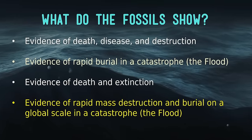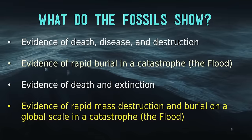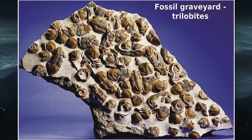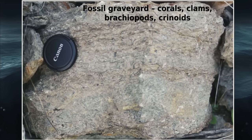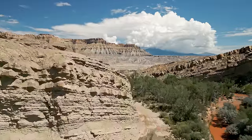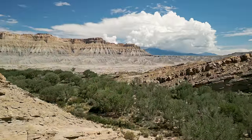We find evidence of death, disease, destruction, rapid burial in a catastrophe, death and extinction, and rapid mass destruction on a global scale in the flood. We don't find fossils as individuals — we find them en masse. Go off the 275 into one of those road cuts and you'll find the limestones full of corals, clams, brachiopods, crinoids, and bryozoans — all broken up and smashed together. When we see fossils, we don't know that's where they died or even where they lived. We only know that's where they were buried.